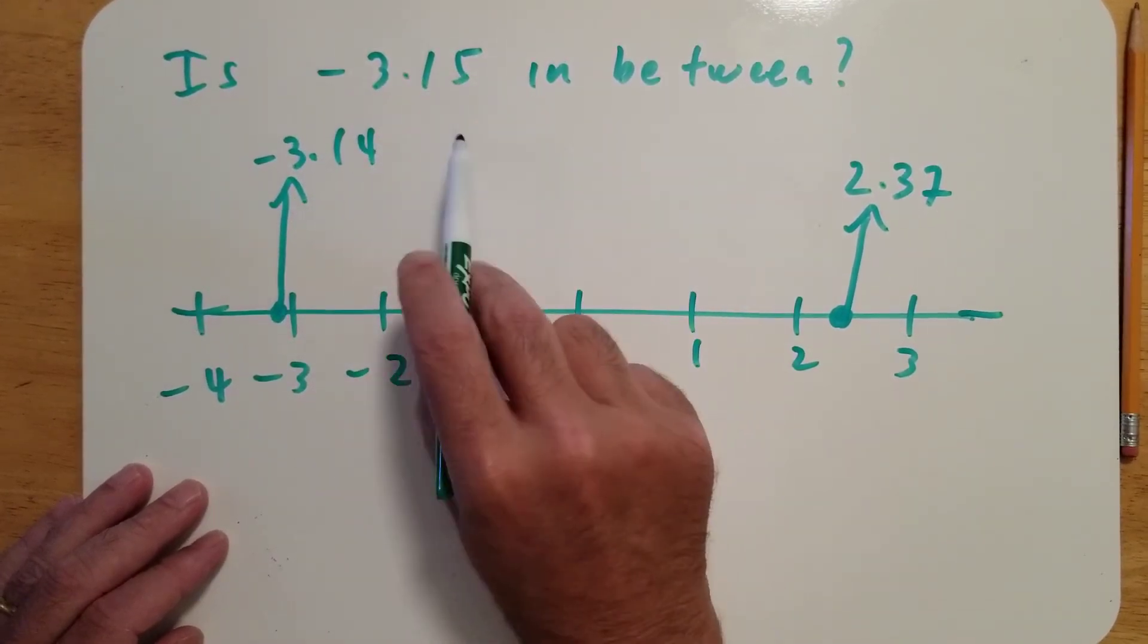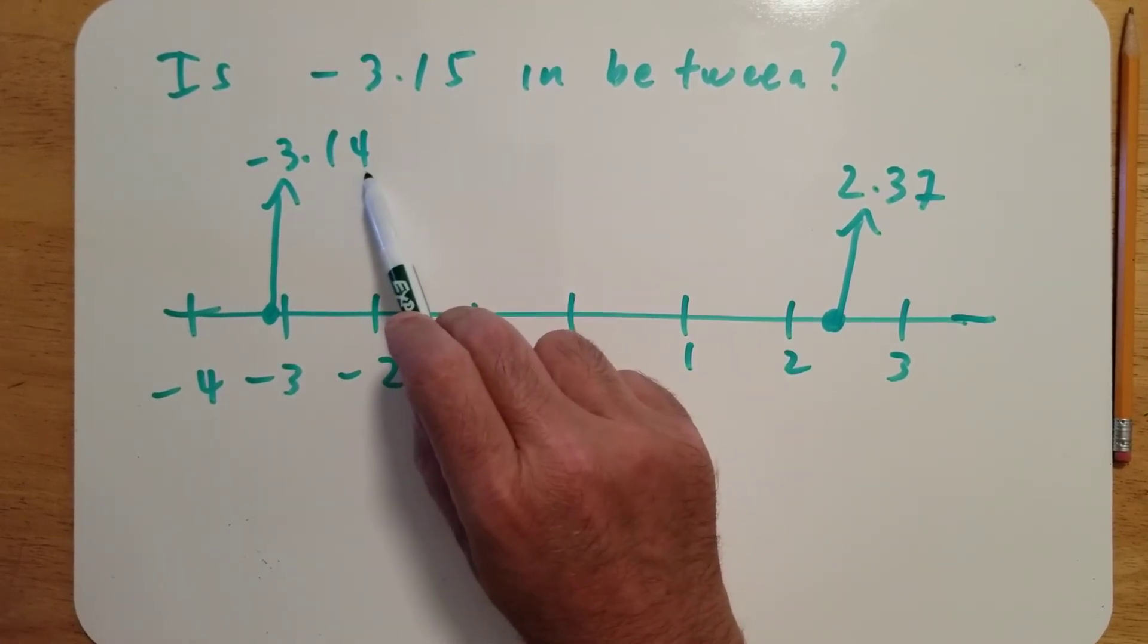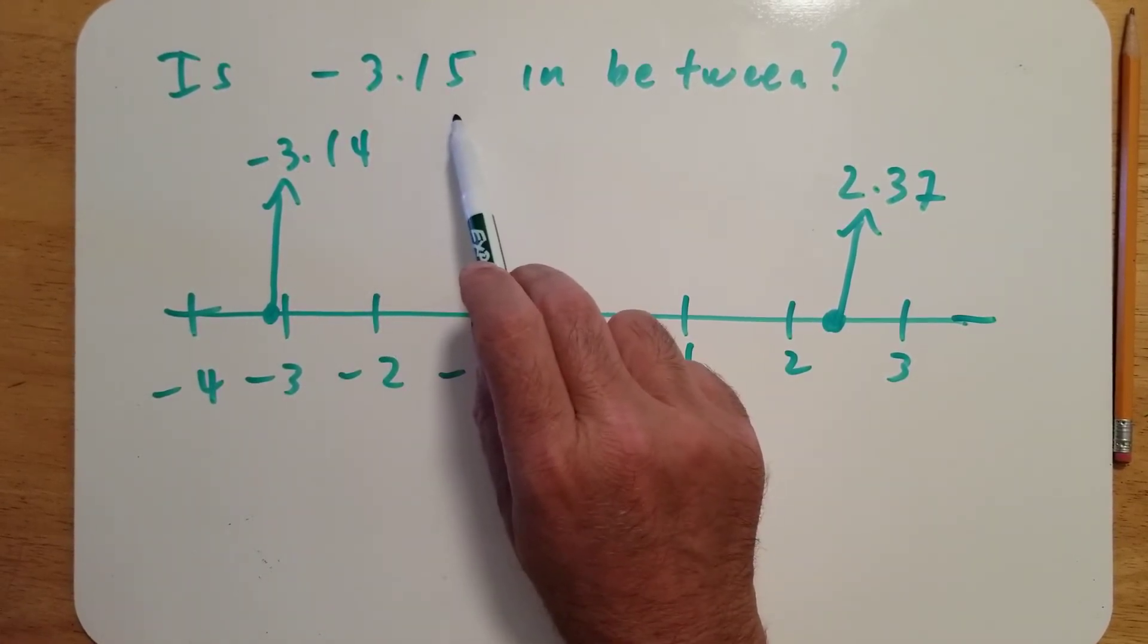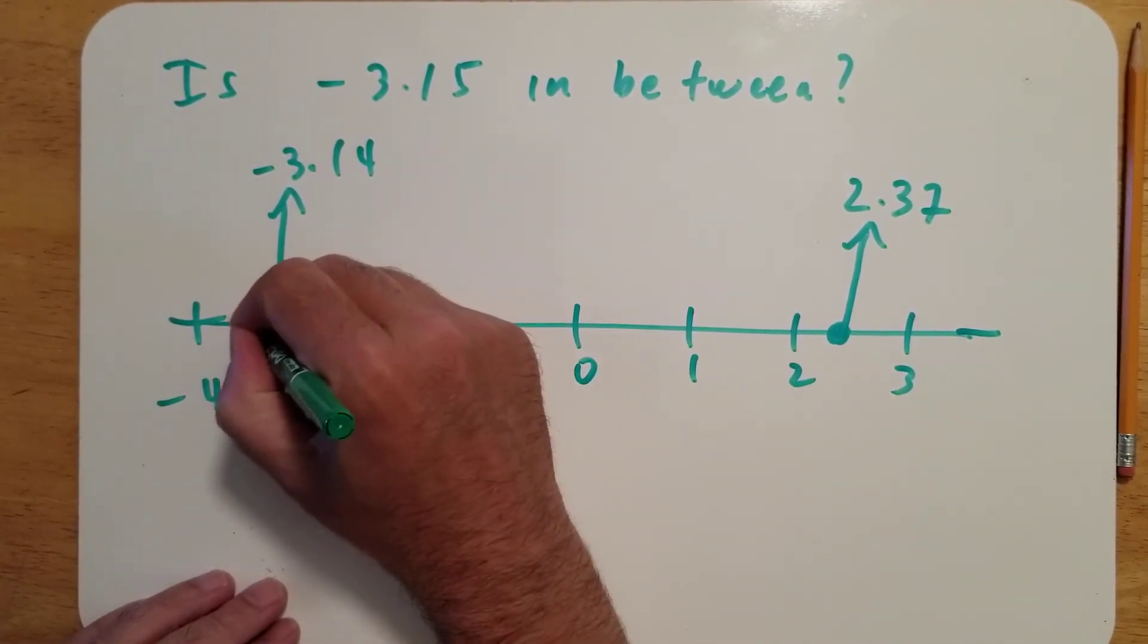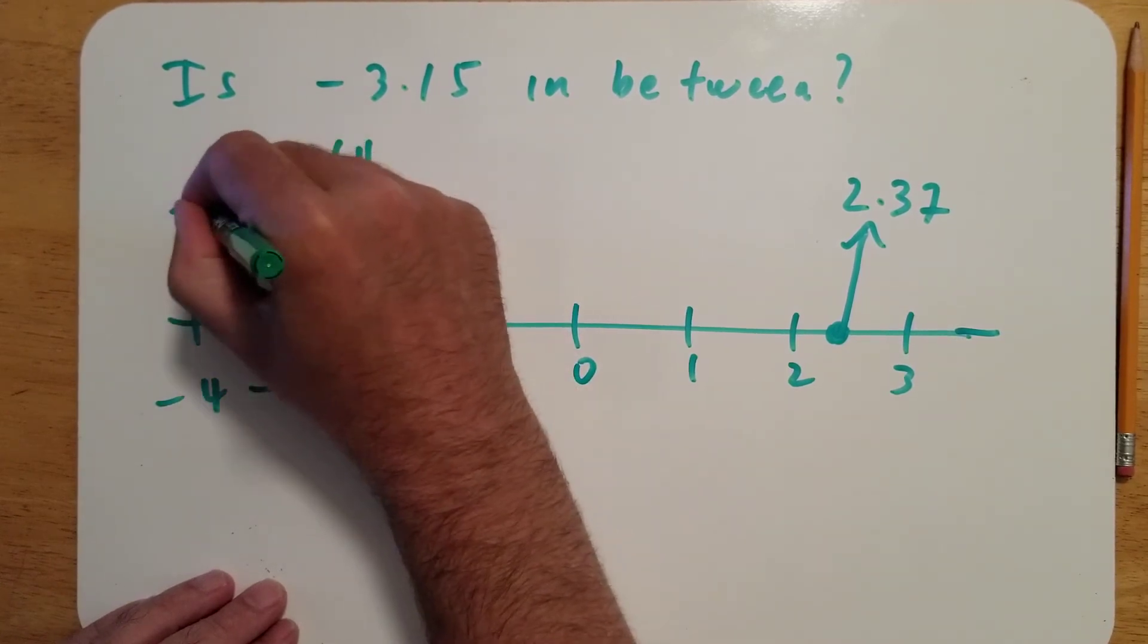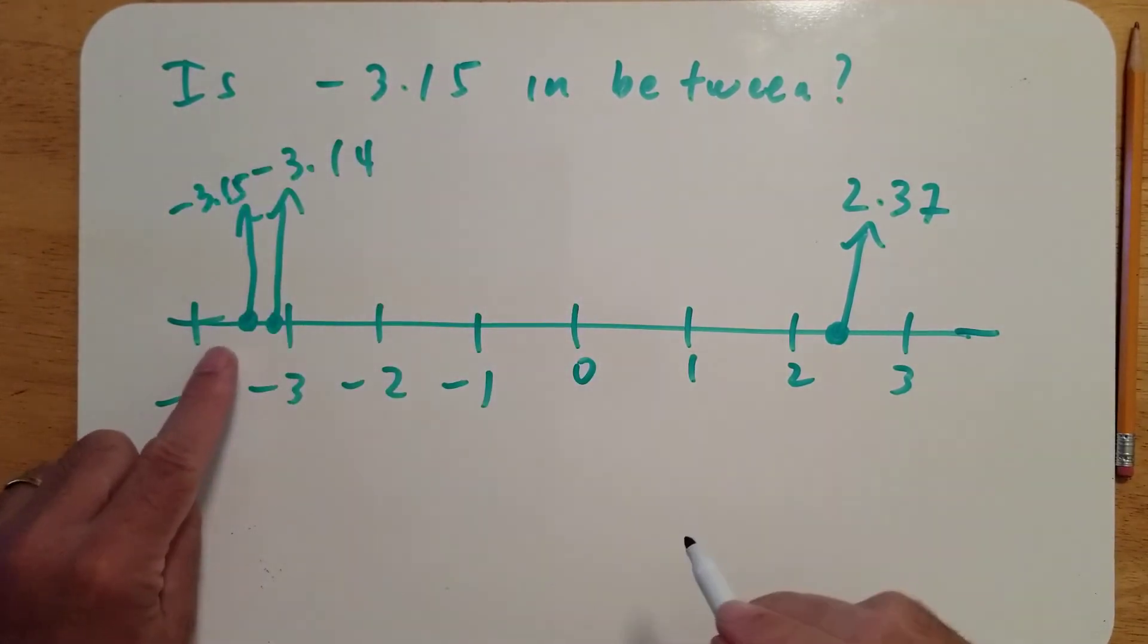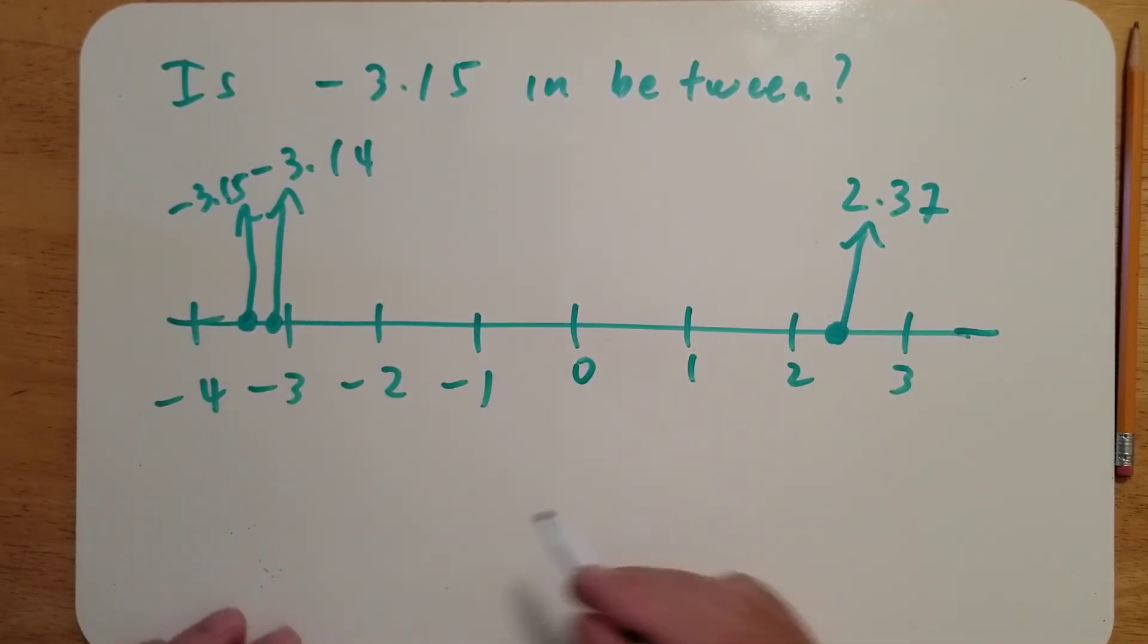So, where is negative 3.15? I purposely made this one close to negative 3.14. But negative 3.15 is just a little bit to the left of negative 3.14. Let's say it's about there. So, there's negative 3.15. Because it's to the left of negative 3.14, it's not in this region in the middle. So, it's not in between.